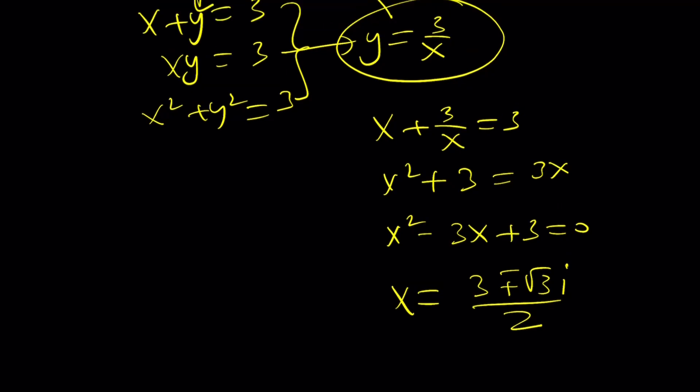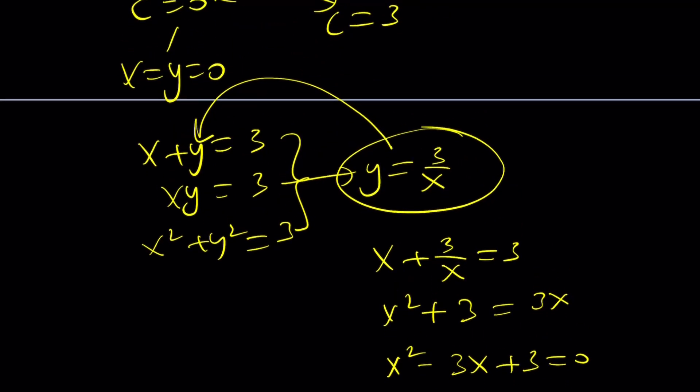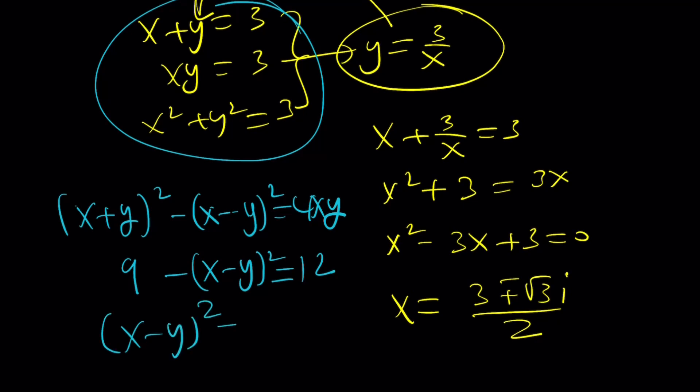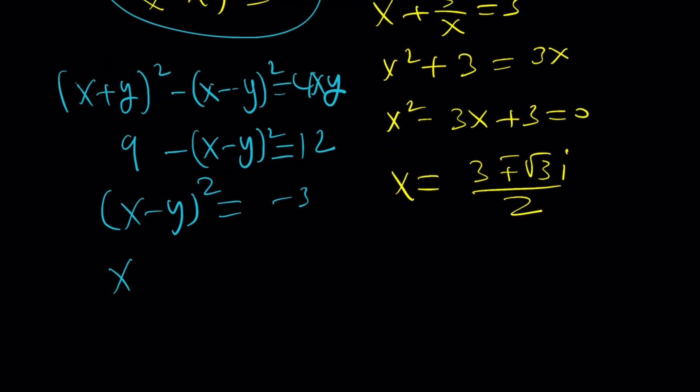Okay, so that's one way to approach it. Another way to approach the system, maybe something like try to find x minus y. And you can do this. This is a really nice identity, by the way. If you subtract from x plus y squared, x minus y squared, you get 4xy. Now we do know x plus y is equal to 3, so that's 9. I don't know this. And I know this is 12. So from here, x minus y squared becomes negative 3, which means x minus y is root 3i with a plus minus sign.